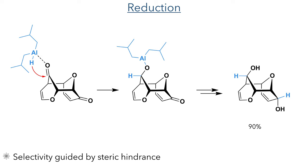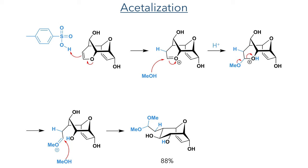This molecule was then desymmetrized by reacting with tosylic acid, which protonates the enol ether. This forms an oxonium intermediate which is attacked by methanol, forming an acetal which is further protonated and then fragments to produce a secondary alcohol and another oxonium intermediate, which is again intercepted by methanol to produce the desymmetrized triol in an 88% yield.